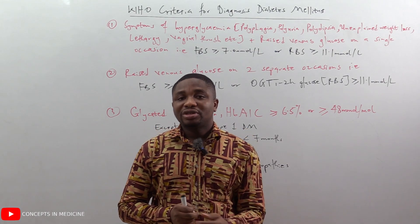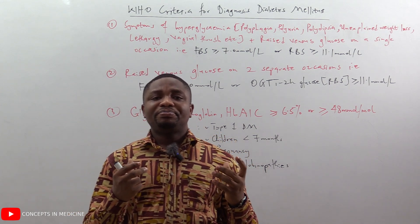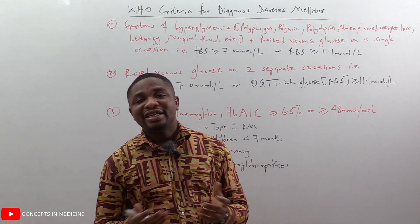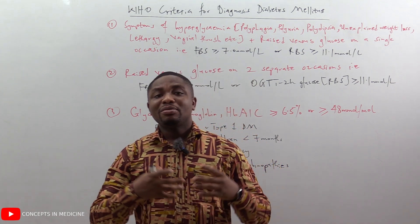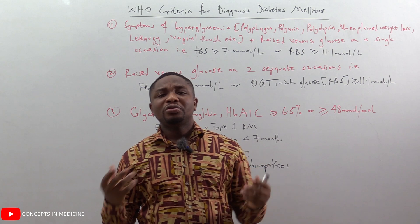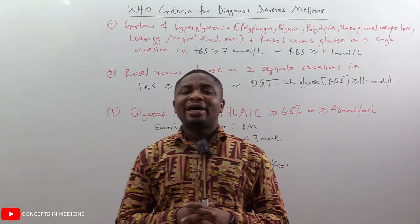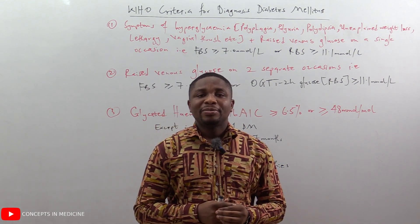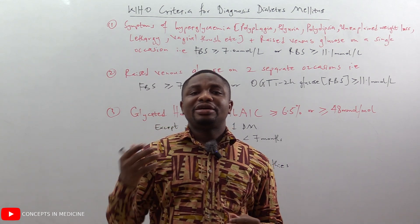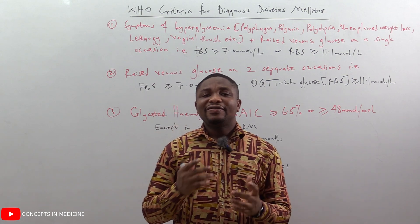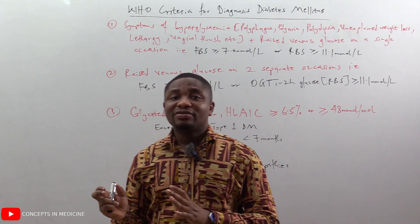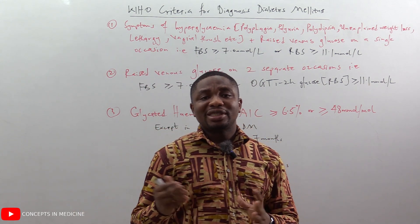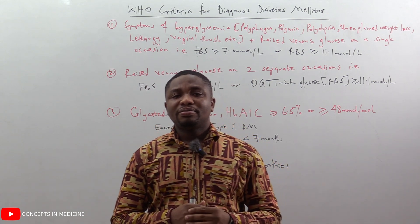For children less than seven months, their circulation is predominated by fetal hemoglobin, meaning there will be few adult hemoglobin. Should there be more glucose in circulation, there are few adult hemoglobin to which it can bind — that is the HbA1c — giving a false negative. In pregnancy, the plasma volume increases by 50% and the red blood cell mass by 20 to 25%, increasing the level of HbA1c component of the HbA1. This means more glucose will bind to it, giving a false positive.